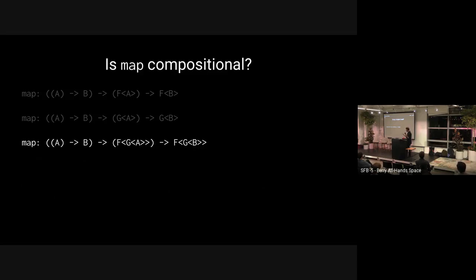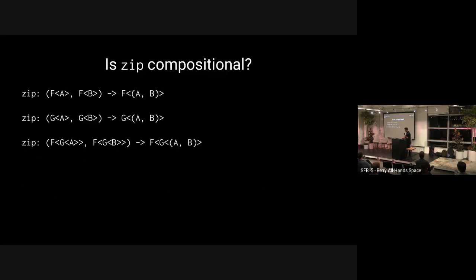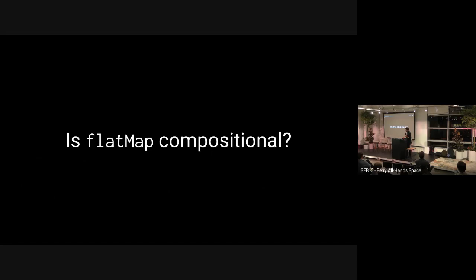There is something lurking underneath the hood showing that a combination of two things gives us a third thing of the same type. The same is true for zip: if you can zip F and you can zip G, then you can also zip F(G) and G(F). So if you have a stream of arrays, you can zip those streams, which under the hood zips those arrays.